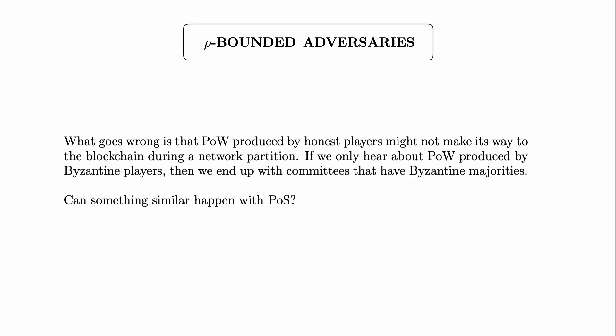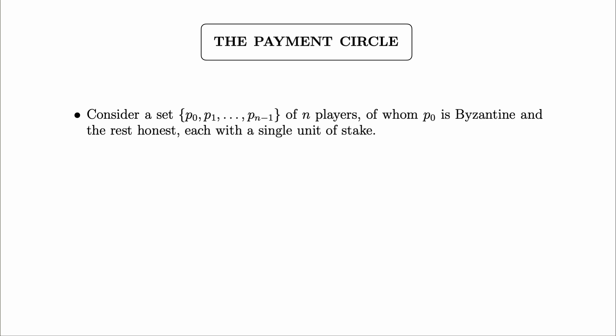This raises the natural question: when can something similar happen with proof-of-stake? Our previous definition basically just assumed it didn't, but could something similar actually happen? The basic answer is yes. Let's see why with a simple example that shows the sort of thing that can happen.